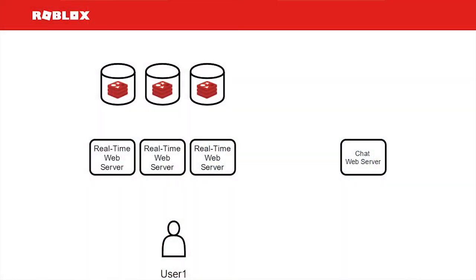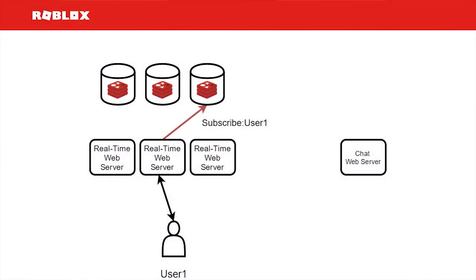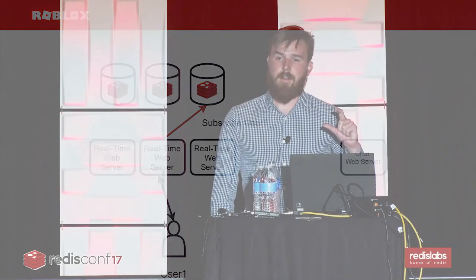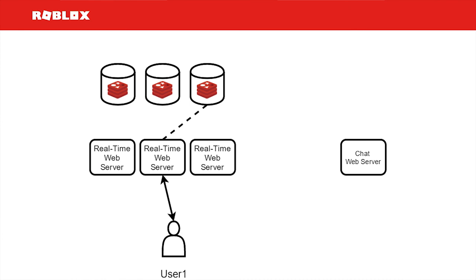We looked at that and thought it might fit our needs, so we built the Roblox real-time message delivery system. Here's how it works: User 1 comes along and wants to have a great time on Roblox — visiting roblox.com or opening the app. The first thing it does is create a SignalR connection, most likely using WebSockets. The web server then subscribes to Redis. We decided to go with a user-based channel system, so the server subscribes to the channel for that particular user, and then it's ready and waiting to receive messages.